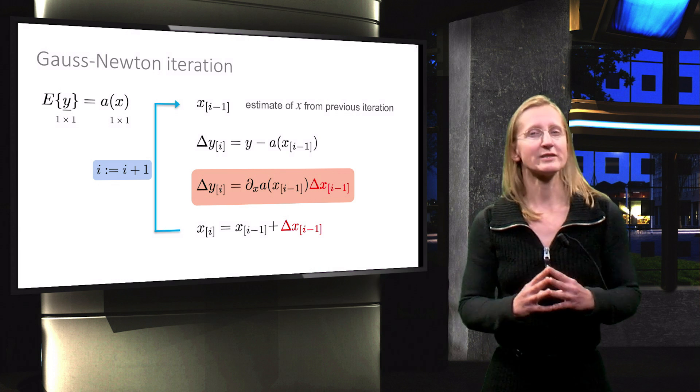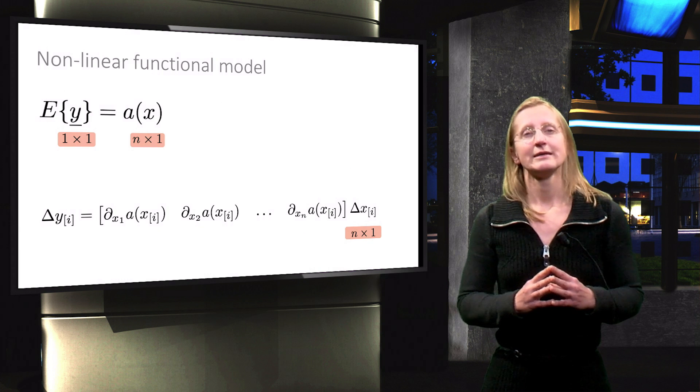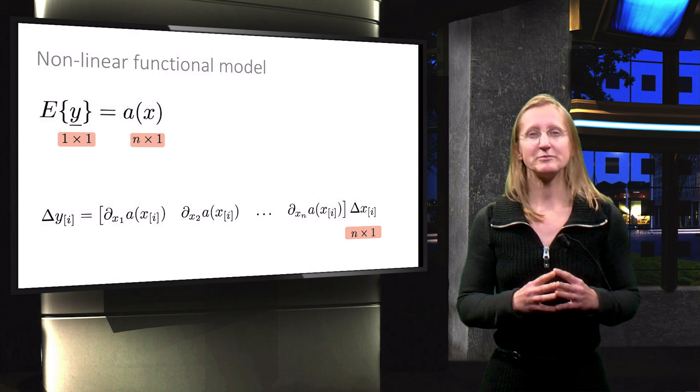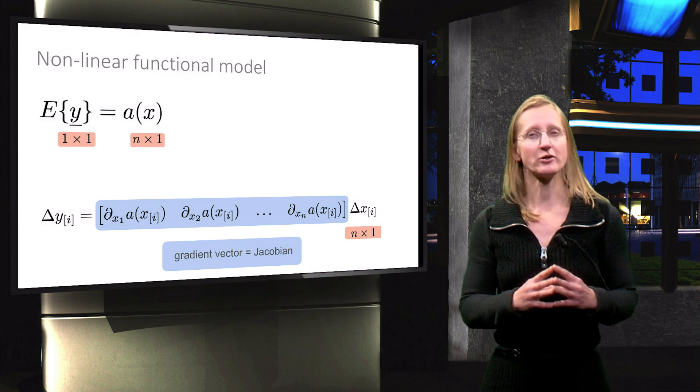In the previous video lecture it was already shown that then we would get the following result. It is very similar, except that we need to use the gradient vector with the n partial derivatives of function a.